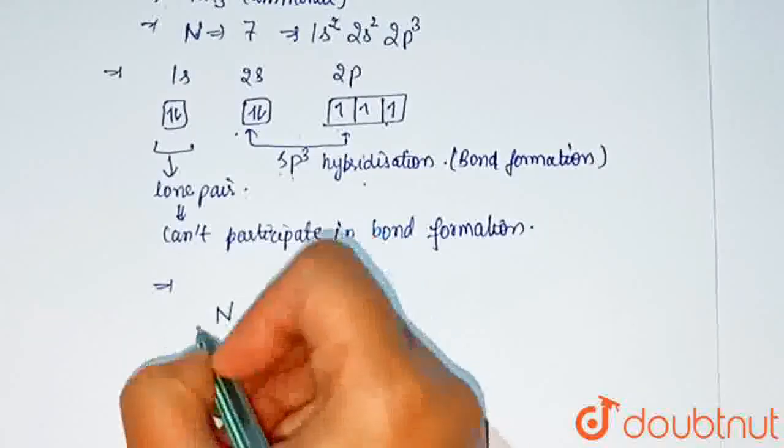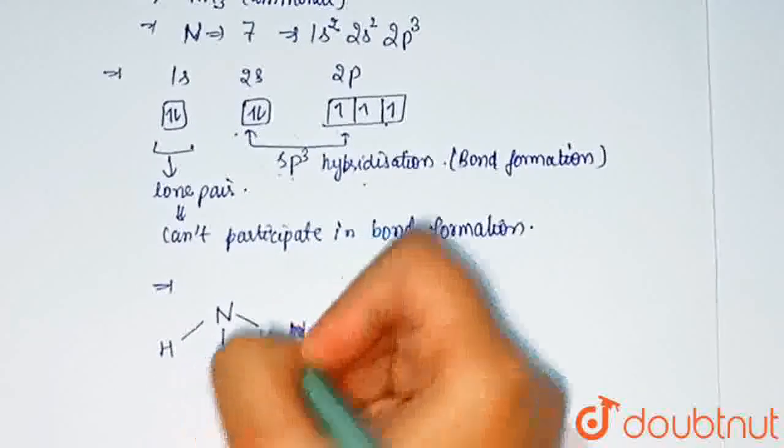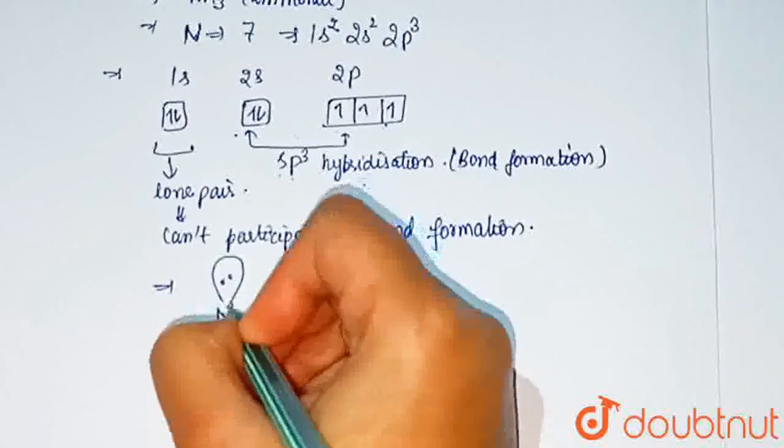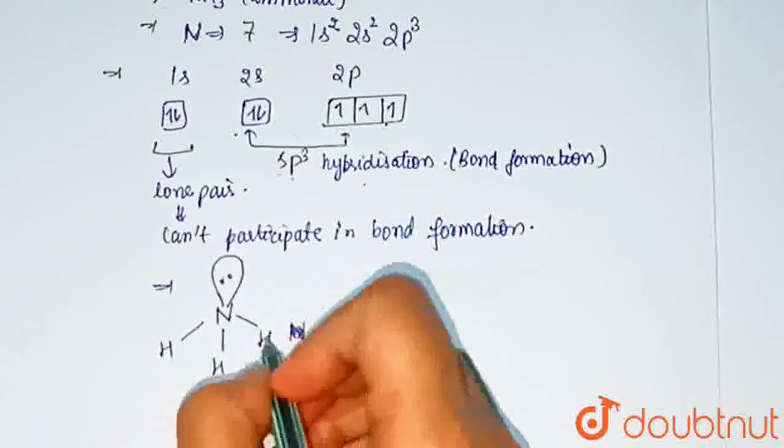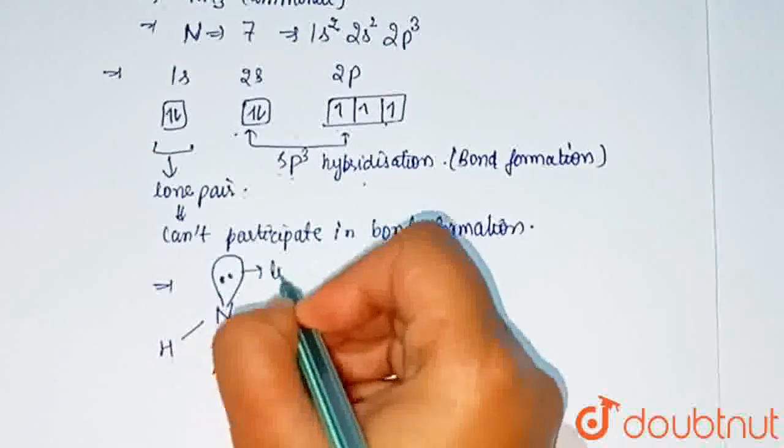And what is expected bond angle in NH3? Draw the structure of NH3. This is the structure of NH3. 3 bonds take part in bond formation and 1 is lone pair.